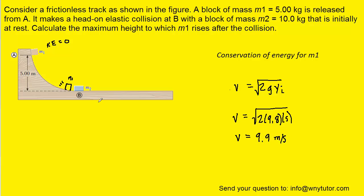So this will be the speed with which m1 is moving right before it collides with m2. And perhaps we can mark that on the diagram.